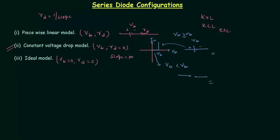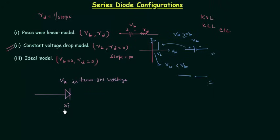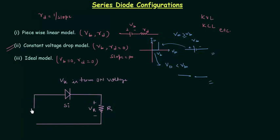Now I will explain how we can calculate current and voltages in a series diode configuration. First I will make the circuit. This is the PN junction diode we are using, and Vk is the turn-on voltage, or barrier potential, for the diode. The diode is a silicon diode and the barrier potential equals 0.7 volts for silicon and 0.3 volts for germanium. R is the resistance, Vr is the voltage across it, and V is the external voltage source.